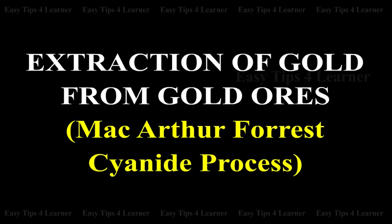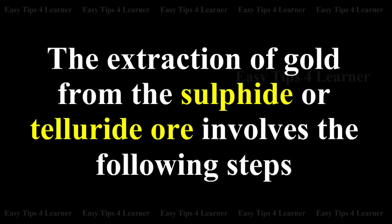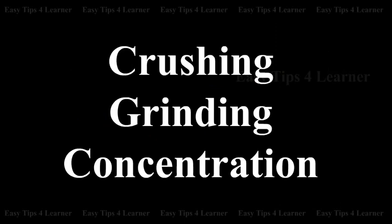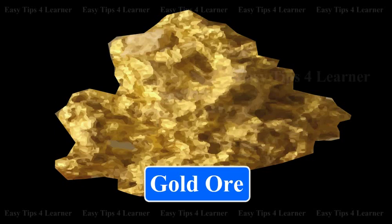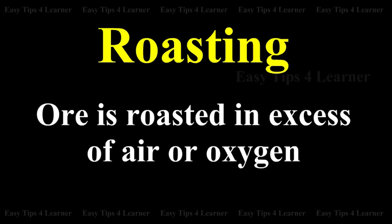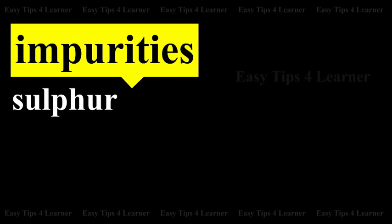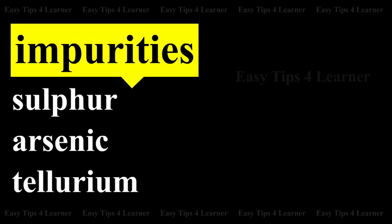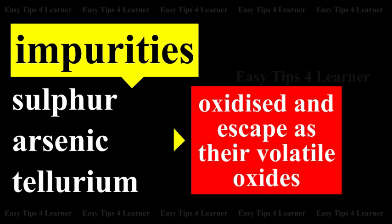Extraction from gold ores — MacArthur-Forest Cyanide Process. The extraction of gold from sulfide or telluride ore involves the following steps. First, crushing, grinding, and concentration: the gold ore is crushed and powdered, then concentrated by froth flotation process. The concentrated ore is then roasted in excess air or oxygen, when impurities of sulfur, arsenic, and tellurium are oxidized and escape as their volatile oxides.